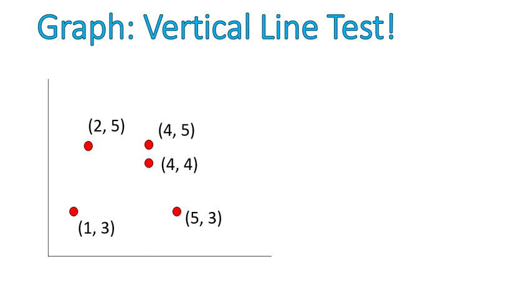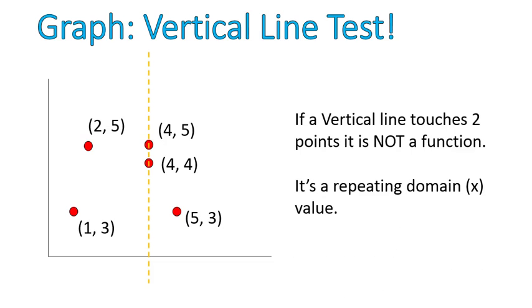Another way, other than listing the ordered pairs, is actually to draw a vertical line. If you draw a vertical line and it hits two points, that means they have the same x value but different y values. So a vertical line test is a way for us to see if it's a function. If the vertical line touches two places, anywhere on the graph, if a vertical line hits more than one place, then it is not a function. So in other words, it has a repeating domain or a repeating x value.